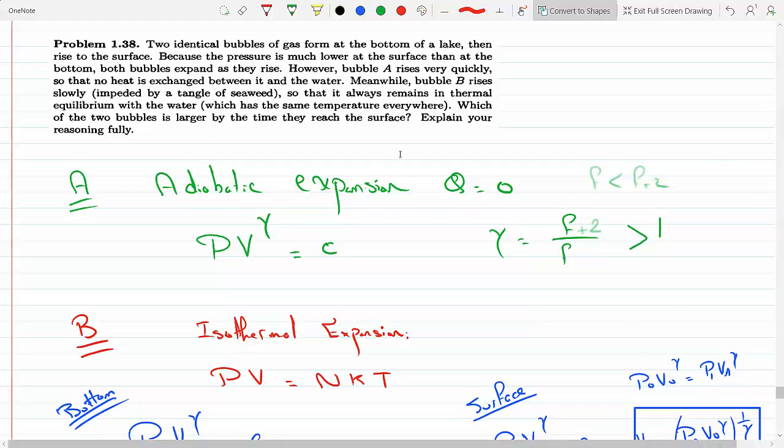Two identical bubbles of gas form at the bottom of the lake. They both rise to the surface, they both expand because the pressure on top is much lower than the pressure on the bottom. Bubble A rises quickly with no heat exchange, bubble B rises slowly remaining in thermal equilibrium. Which of the two bubbles is larger by the time they reach the surface?